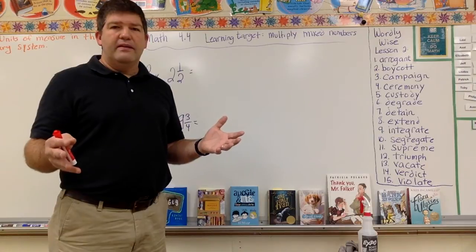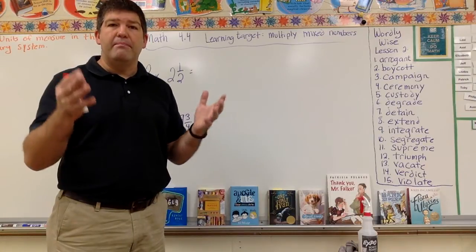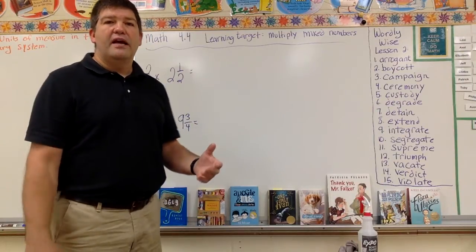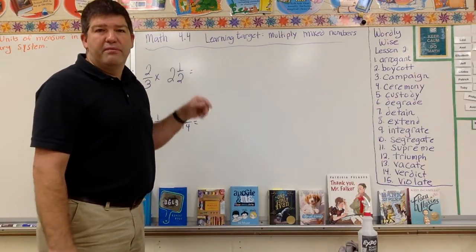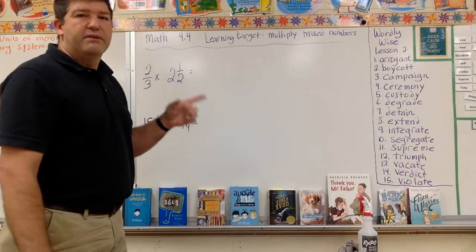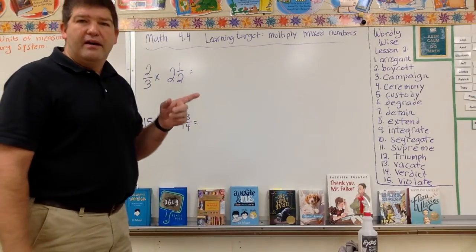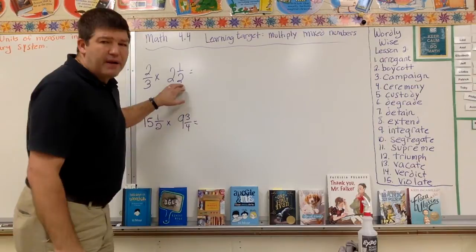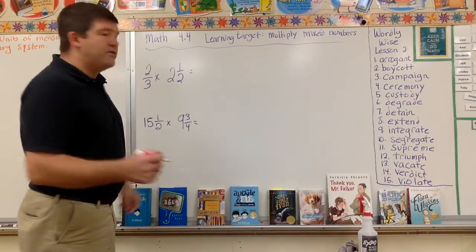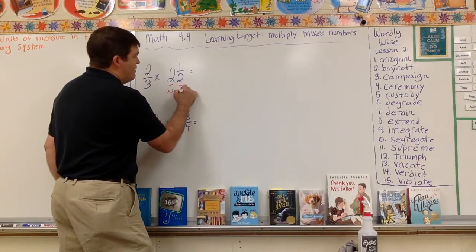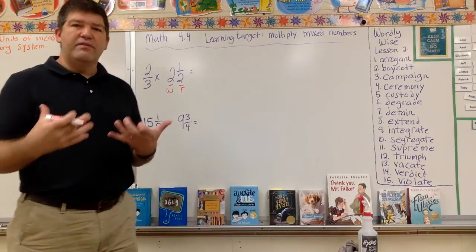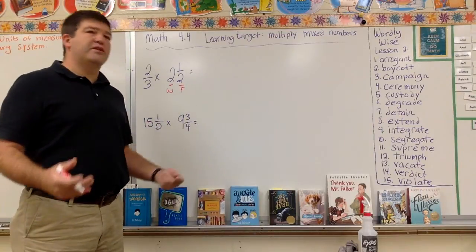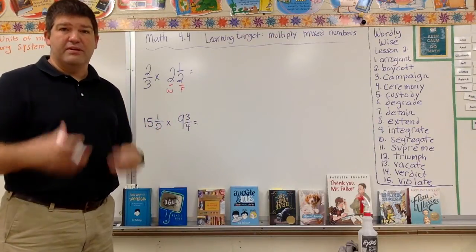The only thing you have to be able to do is take a mixed number to an improper fraction. Then you have fraction times a fraction, and it's just like what you were doing in 4.3. Let's review how to make a mixed fraction into an improper fraction. The reason why this is mixed is because you have both a whole number and a fraction. Two and a half is a whole and a fraction, it's mixed.